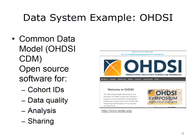An example of the specifications for data and data systems is given by Observational Health Data Sciences and Informatics, or OHDSI, pronounced Odyssey. They define the standard data models that may be used, provide data specifications, and have a whole set of tools to define cohorts for observational studies, look at data quality, facilitate analysis, and then help share results.